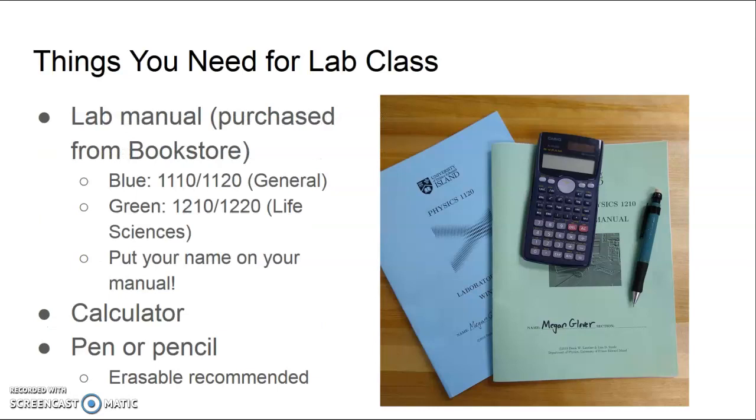Things that you need to bring to lab include your lab manual which has the instructions for the experiments that you're going to do. You can buy this lab manual from the bookstore. If you're in the general physics course you should buy the one with the blue cover and if you're in the physics for life sciences you will buy the one in the green cover. Please put your name on your manual so that we can tell that it's yours if you leave it behind.